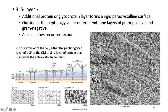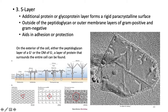Some bacteria cells also have an S-layer - an additional protein or glycoprotein layer forming a rigid paracrystalline surface with a geometric arrangement. It can exist in both gram-positive and gram-negative cells, usually on the outside of the peptidoglycan or outermost layer, and is thought to aid in adhesion or protection. Zooming in reveals equilateral triangles and other protruding structures.